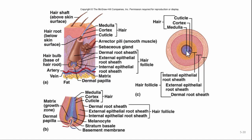Hair texture is determined by the shape of the follicle. The follicle is made up of an internal epithelial root sheath, an external epithelial root sheath, and a dermal root sheath. If the follicle is very round, you get very straight hair. If the follicle is oval, you get more wavy hair. If the hair follicle is flat, you get extremely curly hair.